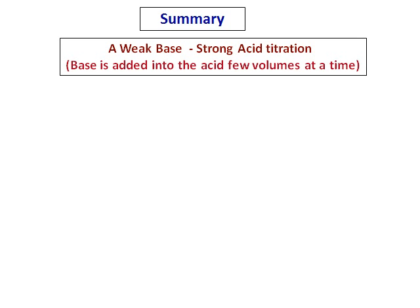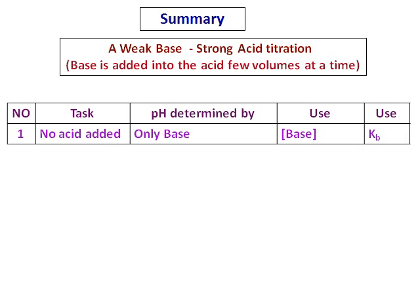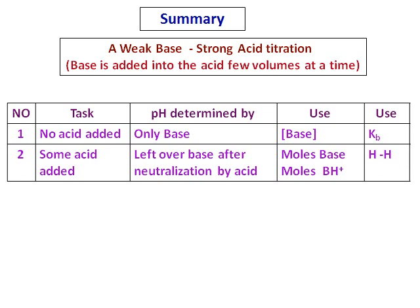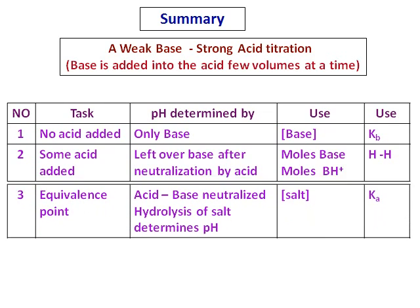Let's do a summary of what we have learned. We were doing a weak base and strong acid titration. The first case was when no acid was added — only the base was present — so use the concentration of the base and the Kb value, because the ionization of the base determines the pH. The second case was when some acid is added: the acid reacts with the base, and the leftover base after neutralization gives the pH. Calculate the moles of the base and the moles of the salt (NH₃ and NH₄⁺) and use the Henderson-Hasselbalch equation.